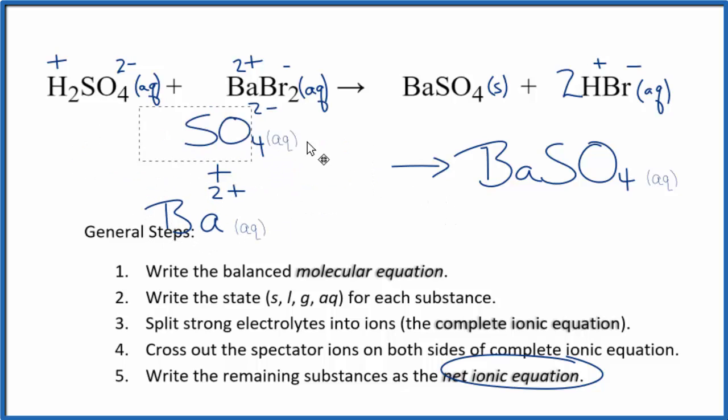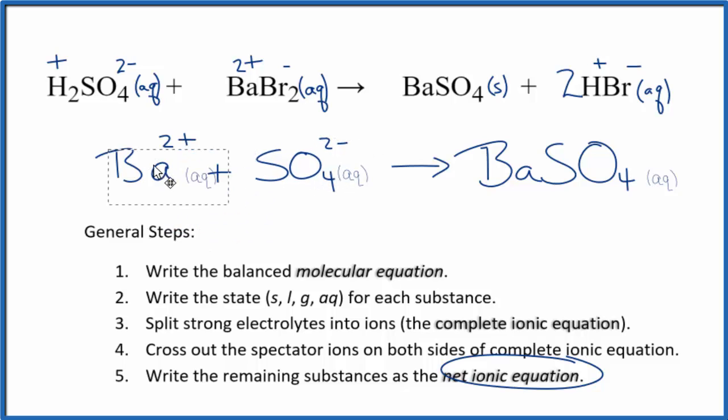Often we'll see the positive ion put first in these net ionic equations. It doesn't really matter. Maybe it looks a little nicer. And that's it. That's the net ionic equation for H2SO4 plus BaBr2. This is Dr. B. Thanks for watching.